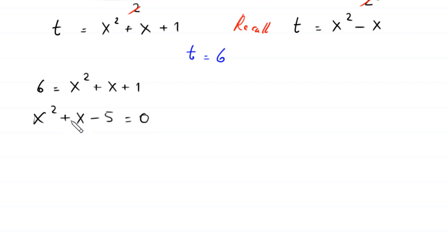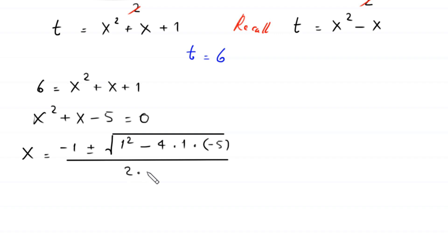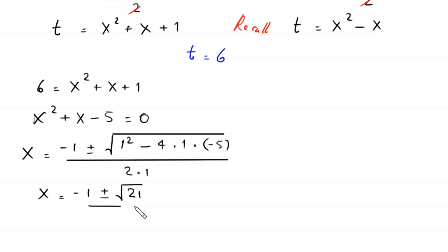This quadratic is not factorable, so we apply the quadratic formula: x equals negative 1 plus or minus the square root of 1 squared minus 4 times 1 times negative 5, all divided by 2 times 1. Simplifying, 1 plus 20 gives root 21, so x equals negative 1 plus or minus root 21, divided by 2.